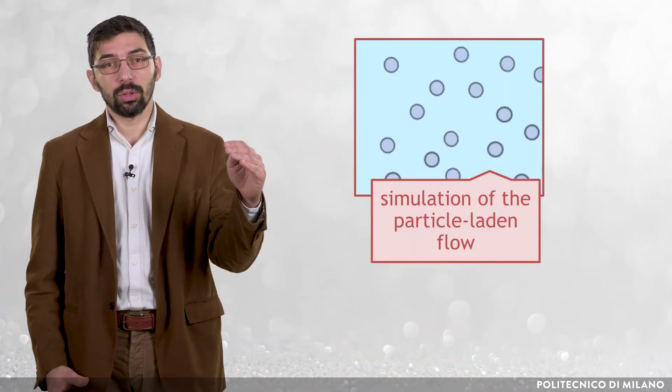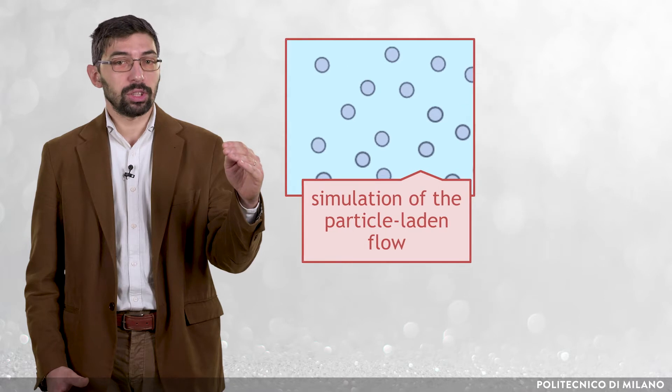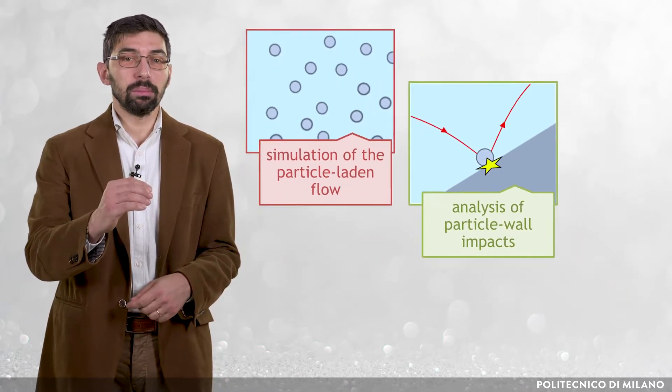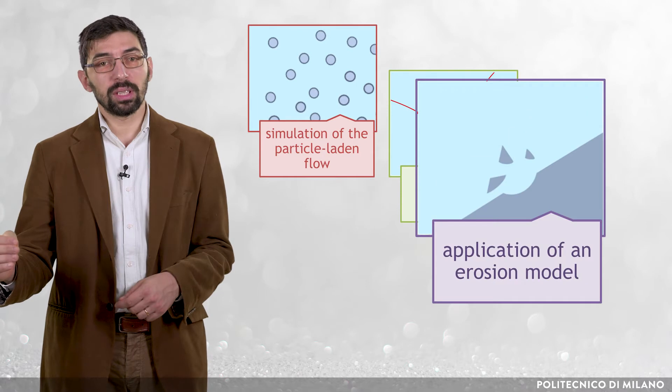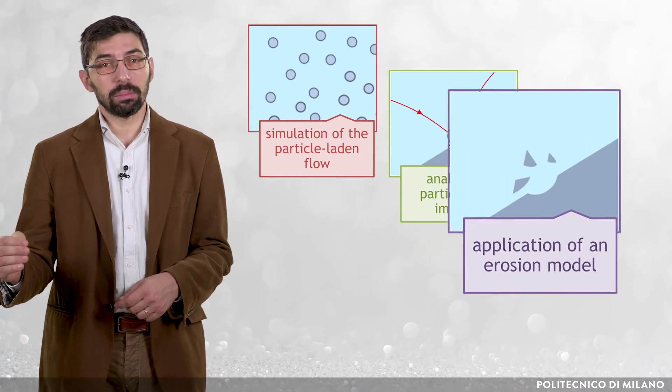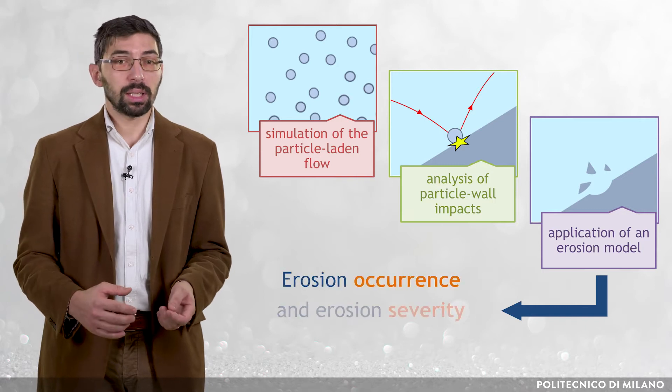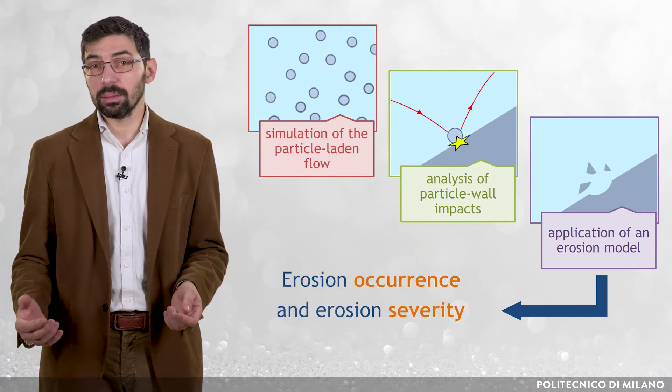There exists a well-established methodology to estimate solid particle erosion. Such methodology relies on the following steps in sequence: calculation of the particle-laden flow by means of an Eulerian-Lagrangian model, analysis of the particle-wall impacts, and application of an erosion model to each particle-wall impact. The procedure allows estimating the occurrence and the severity of erosion in the system.